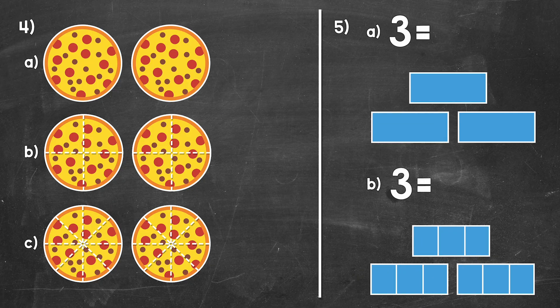Taking a look at number four, we are going to work with pizzas again. We have three sections: A, B, and C. You'll notice we have two whole pizzas for each section — we're actually going to write three different fractions that are equal to two. So all of these will be equivalent; they will all represent the same value of two. This example shows that we have equivalent fractions for whole numbers, just like we do for any other fraction.